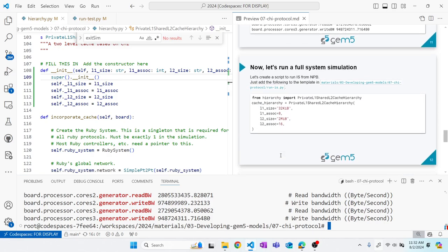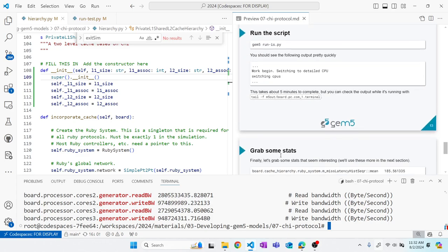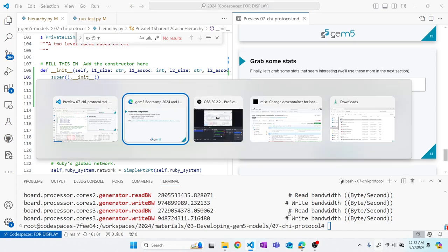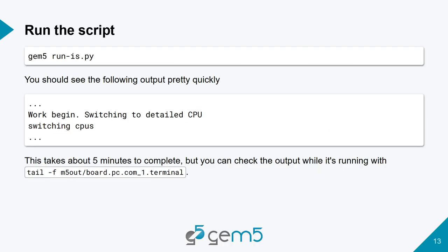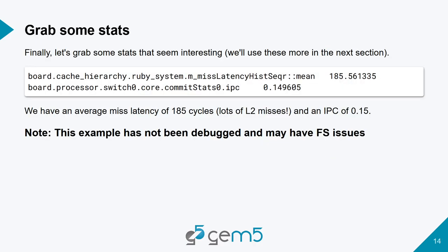We can also run full system simulation, though there's a caveat — there might be some bugs. When you run full system, it fast-forwards using the KVM CPU and then switches to detailed timing at the work begin. It takes about five minutes to complete. When it completes, you would see stats such as IPC of 0.15 and average miss latency of 185. I did not carefully debug all my CHI settings, so there may be bugs, especially in full system mode using DMA.